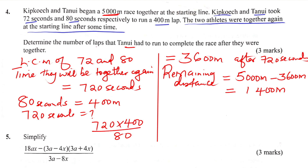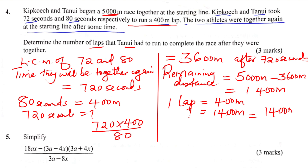But the question asks for the number of laps. Remember that one lap is 400m. So for the remaining 1400m, we need to find how many laps that is. We just divide 1400m by 400m, and this gives 3.5 laps.